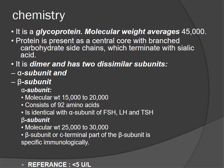Chemistry of HCG: it is a glycoprotein with molecular weight averaging about 45 kD. The protein is present as a central core with branched carbohydrate side chains, terminated with sialic acid. It is a dimer with two dissimilar subunits: alpha and beta. The alpha subunit has molecular weight of 14 to 20 kD, consists of 92 amino acids, and is identical with the alpha subunit of FSH, LH, and TSH. The beta subunit has molecular weight of 25 to 30 kD and is immunologically specific. Reference value is less than 5 units per liter.